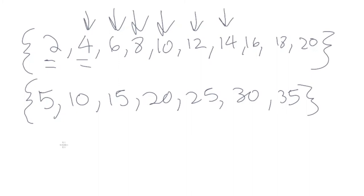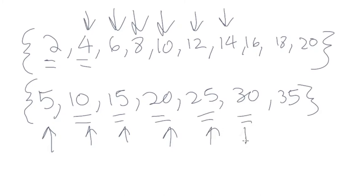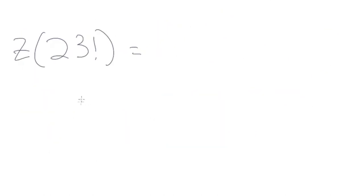As it turns out, factors of 5 help you a lot more. Every multiple of 5 is relevant: 5, 10, 15, 20... Knowing factors of 5 is much easier and more useful for determining factors of 10. So we just need to count the number of multiples of 5 between 1 and 23.